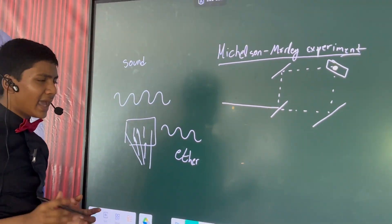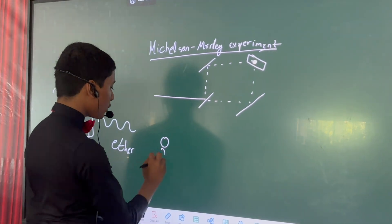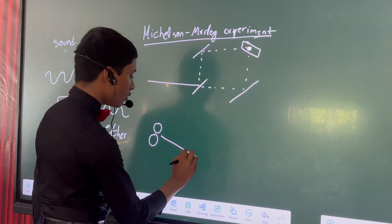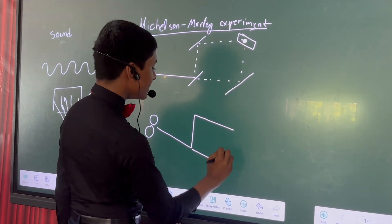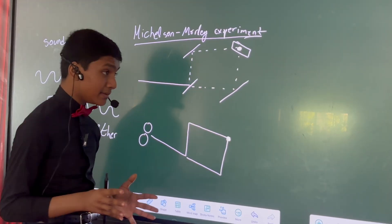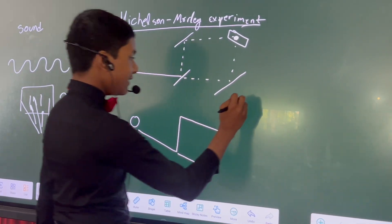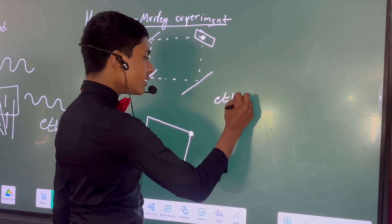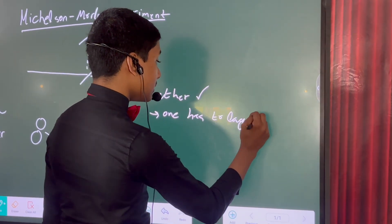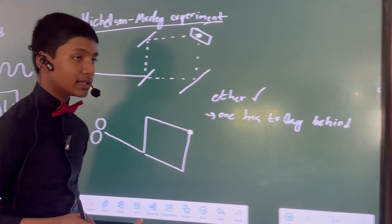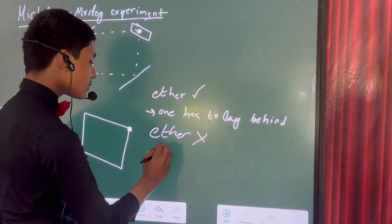What did the Michelson-Morley experiment actually do? Well, it is kind of like having two people walk through the same course — one of them has to go this way and then that way, and the other has to go that way and then this way — and then seeing if they both take the same exact amount of time, because they travel the same exact distance. And if the ether existed, then one of them has to lag behind, because the ether's motion must affect its motion.